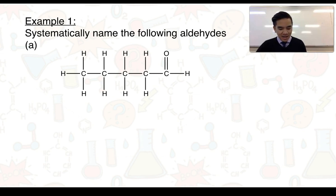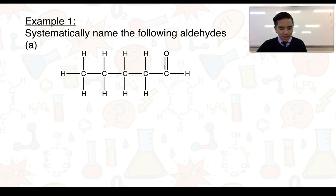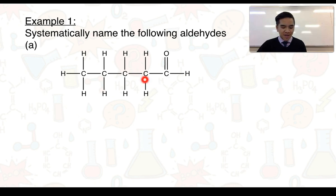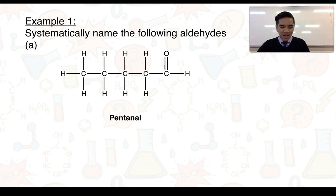For our first naming example, we can see a carbonyl group at a terminal carbon, making it an aldehyde with a suffix ending in '-al'. We count the carbon atoms in the longest chain, including the carbonyl carbon, and find five carbon atoms. An organic compound with five carbons is a pentan-, so this aldehyde is called pentanal. Unlike alcohols, we don't need to denote the position of an aldehyde's functional group because it always sits on the first or last carbon by default.